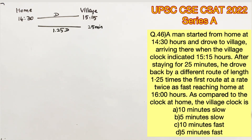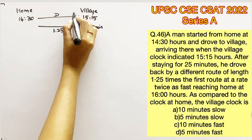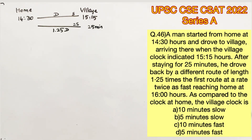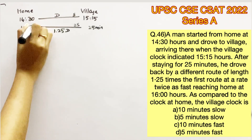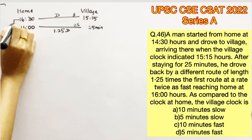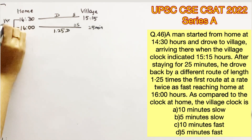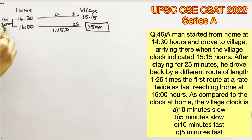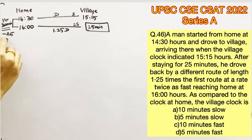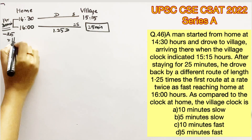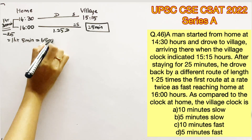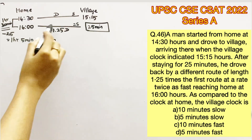He drove back at a rate twice as fast, reaching home at 16:00 hours. So let's say the first trip was at speed S, and the second route at speed 2S. The total time frame from 14:30 to 16:00 is 1 hour and 30 minutes. Subtracting the 25-minute break gives 1 hour 5 minutes, which is 65 minutes of total travel time.